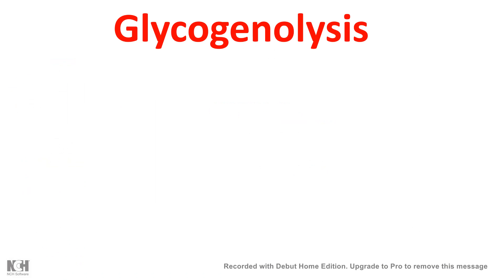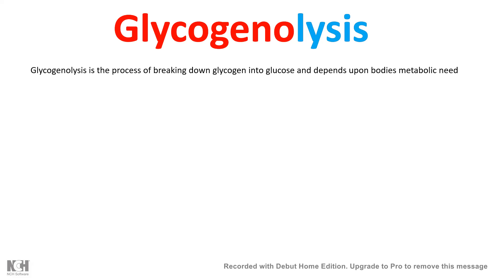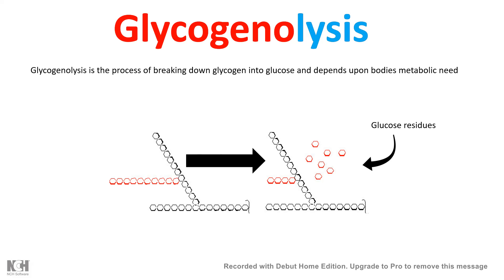In this video I'll be talking about glycogenolysis. If we break down the term it's glycogen and lysis, so basically it means breaking down of glycogen. Simply, glycogenolysis is the process by which a big glucose polymer — glycogen — is broken down into single glucose residues.